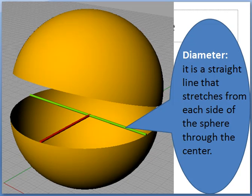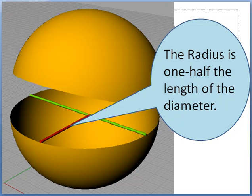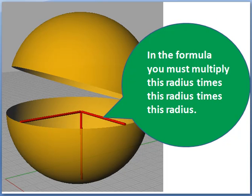We'll take a look at a couple of things. The diameter is the straight line that stretches from each side of the sphere through the center. You can see it here, it's the green line. The radius, here, as the red line, the radius is one half of the length of the diameter. The radius is from the edge to the center of the sphere, and you can see here that this radius times that radius times that radius is what you must multiply in the r cubed part.